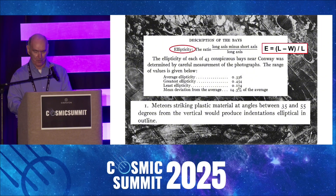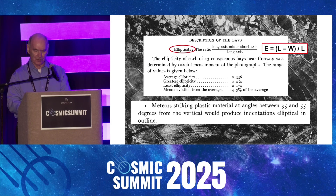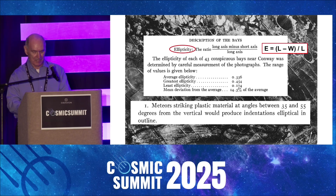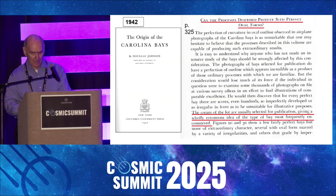Melton and Shriver defined a formula for ellipticity based on the width and length of the bays. This was one of the first applications of mathematics to the Carolina Bays. From the geometry of the bays, the authors concluded that meteors striking plastic material at angles between 35 and 55 degrees from the vertical would produce indentations elliptical in outline. However, further exploration of the Carolina Bays did not find any meteorite fragments or evidence of meteorite impacts.